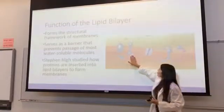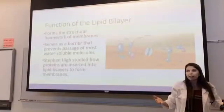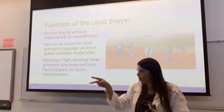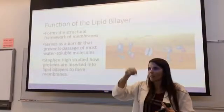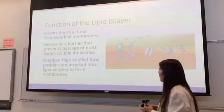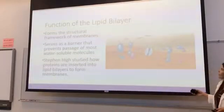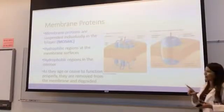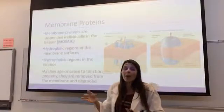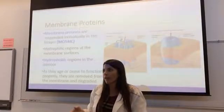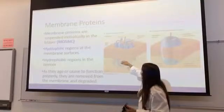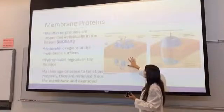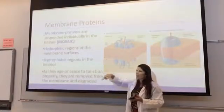Do you recall what these structures are in the diagram? They're proteins. So the phospholipid bilayer has those phospholipids, and then it's peppered with proteins. These membrane proteins — are they random? No. But if you didn't know that, they would definitely appear to be random. These proteins are suspended within that phospholipid bilayer, and they form what we call a mosaic.